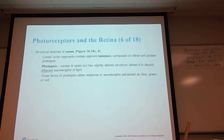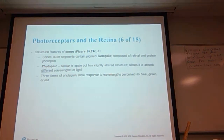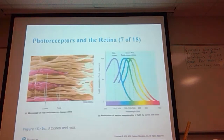Cones have outer segments containing a pigment called iodopsin, composed of retinol and the protein photopsin. Photopsin is similar to opsin but has a slightly altered structure which allows it to absorb different wavelengths of light. Three forms of photopsin allow response to wavelengths perceived as blue, green, or red. In a little while we'll talk about red-green colorblindness, which is caused by disruptions in the photopsin in affected people.